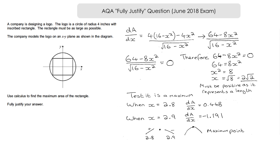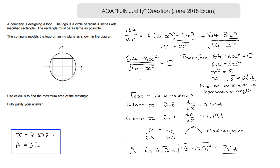Now we calculate the maximum area. Substituting x = 2√2: Area = 4 × 2√2 × √(16 − (2√2)²). You can use the calculator for this or work it manually. The result is 32, which matches the earlier calculator verification. We've found the maximum area of the rectangle is 32 square inches using a fully justified method showing evidence at every step.